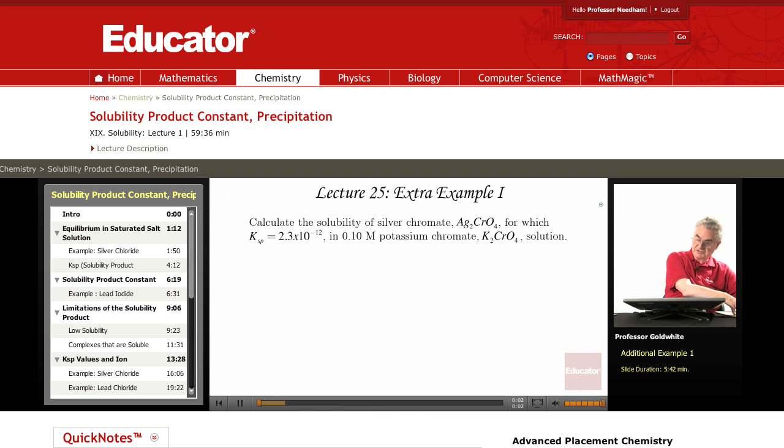This problem has to do with solubility products. It is certainly an example of something we've called the common ion effect. We're looking for the solubility of a chromate salt in a chromate solution. Let's look at silver chromate as it dissolves in water.